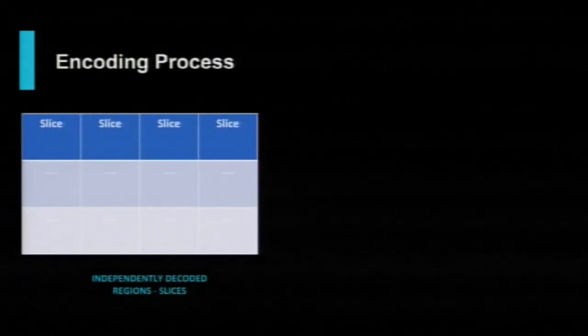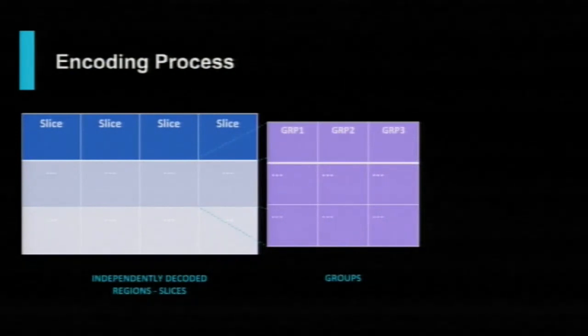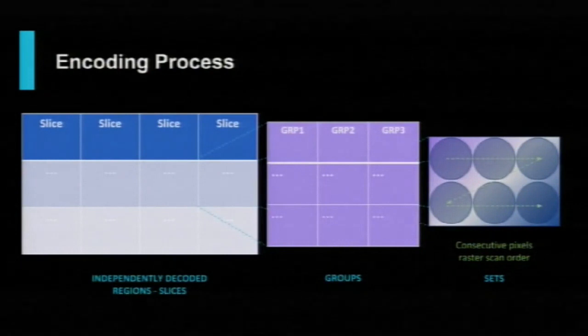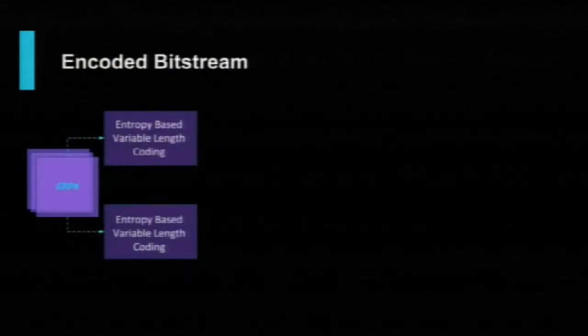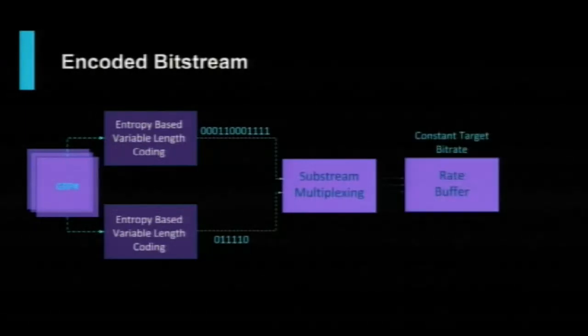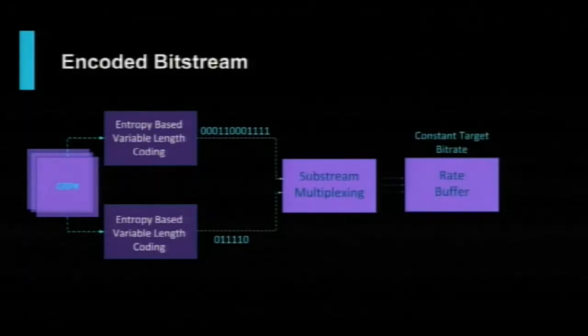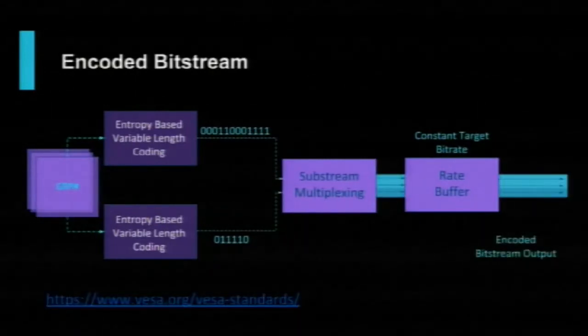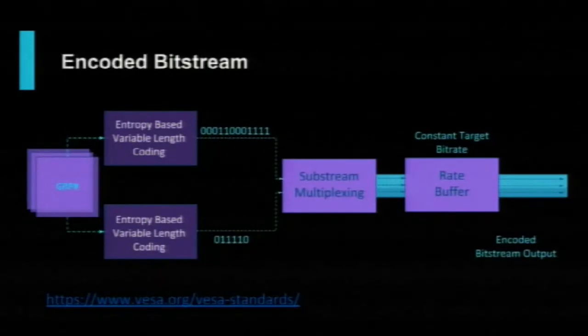Quick overview of the encoding process: you start with a frame that gets divided into independently decoded segments called slices. One slice is groups of pixels, where each group is three or six consecutive pixels. It goes through a convoluted encoding process involving block prediction, quantization, and the residual error gets entropy encoded to generate a variable length coded bitstream. Bitstreams from all groups are combined into a multiplexed sub-stream, then passed through a rate buffer to produce a constant bitrate output. There's a roughly 5,000-page spec covering all encoding details.